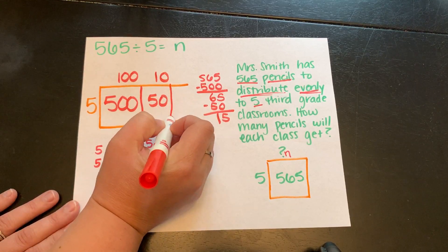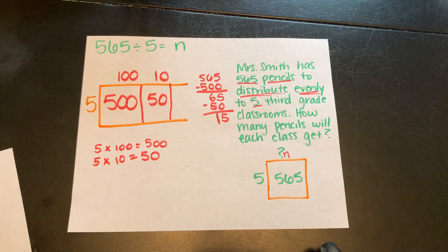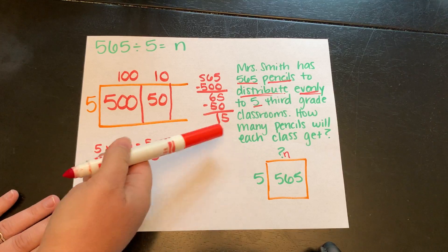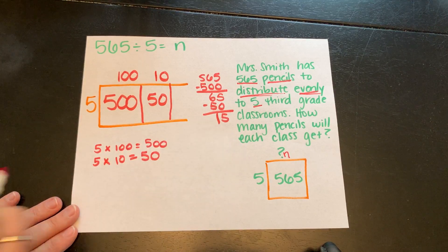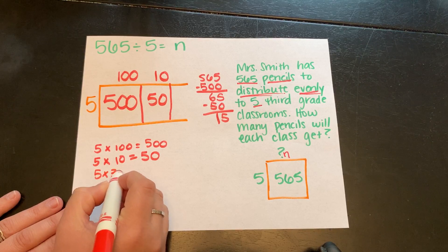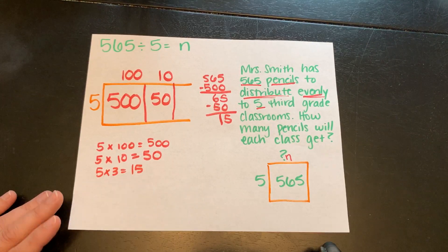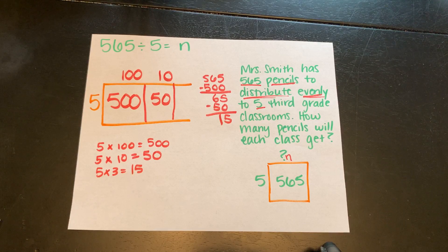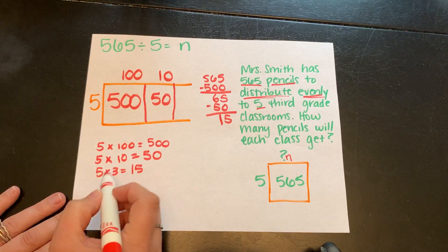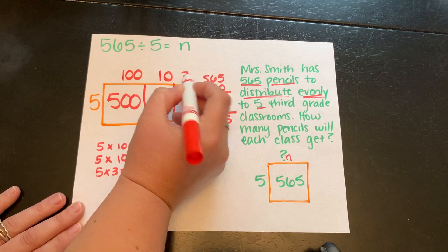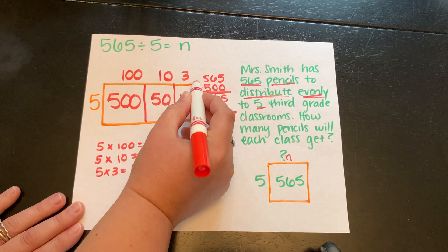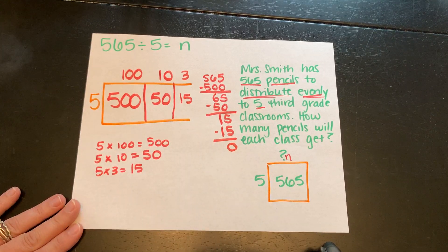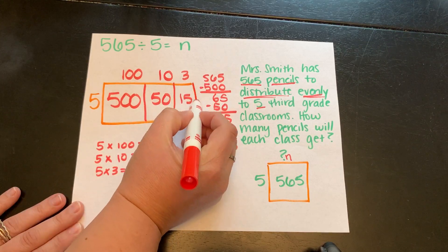I have 15 left. Do I know any facts that will help me decide 5 times something that's going to get me close to 15? Well, I know 5 times 3 is 15. And if it helps, you can actually get out a multiplication chart and use that to try to find those numbers that we can use to create our partial quotients. So 5 times 3 is 15. I'm going to subtract 15. Looks like I'm down to 0. Looks like I finished my problem. So I can now close my array.